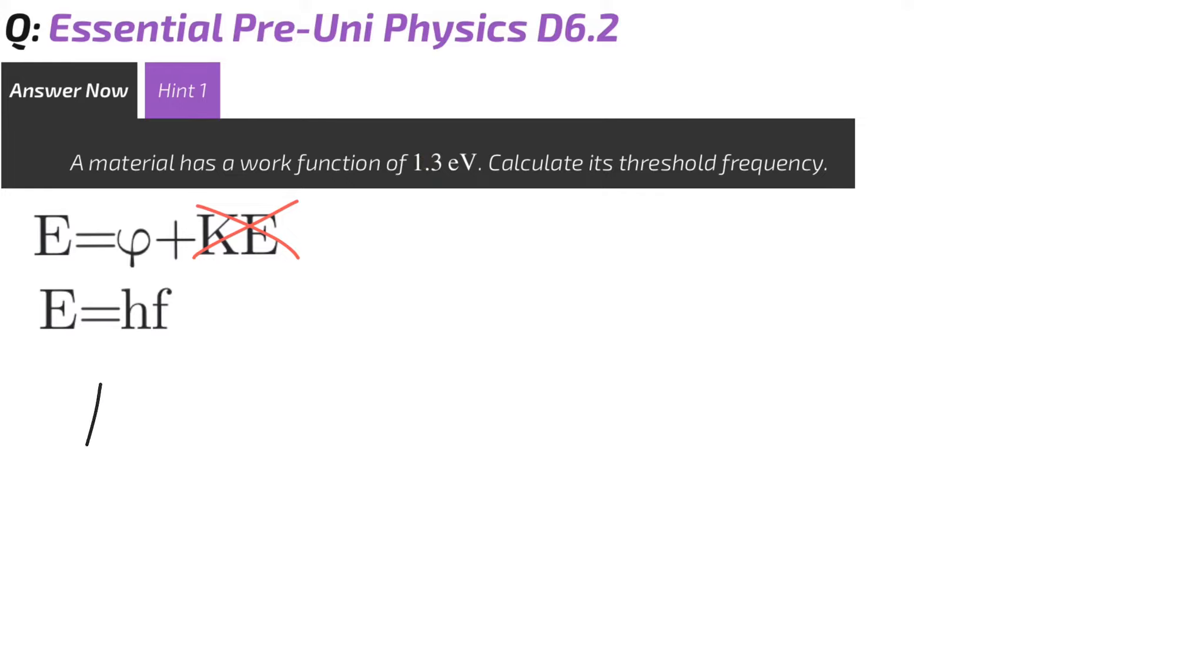Therefore, we can say that HF is going to be equal to the work function. Rearranging for F, we get phi over, or the work function, over H.